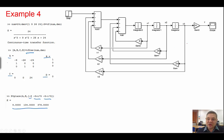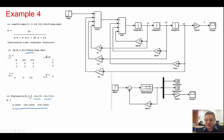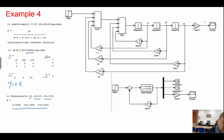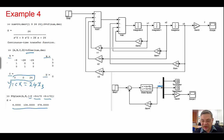For implementation, you can use this direct approach with gains 904 and 376, or you can use the state space block. The problem here is Y equals CX — in this case it's 24 times X3. So what I get from the state space block is all the state variables: X1 terminated, X2 terminated, X3 multiplied by gain of 24, which gives my actual Y.